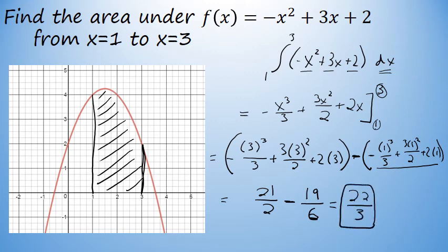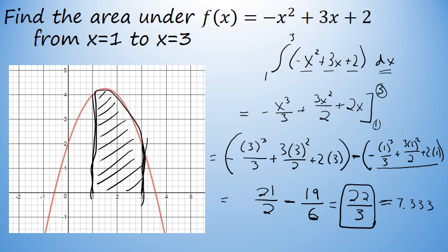The exact area between negative x squared plus 3x plus 2, from x equals 1 to x equals 3, between this curve and the x-axis, is 22 thirds square units. Remember that we estimated the answer to be somewhere around 7 — 22 thirds is approximately 7.333, or 7.3 repeating. Our answer makes sense; 22 thirds is the exact area.